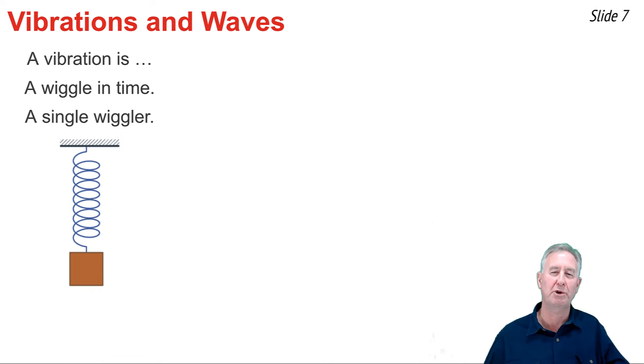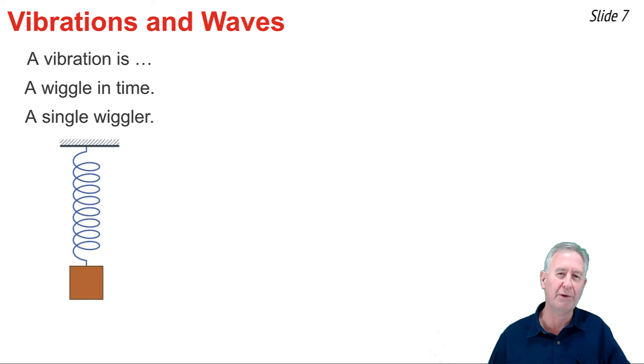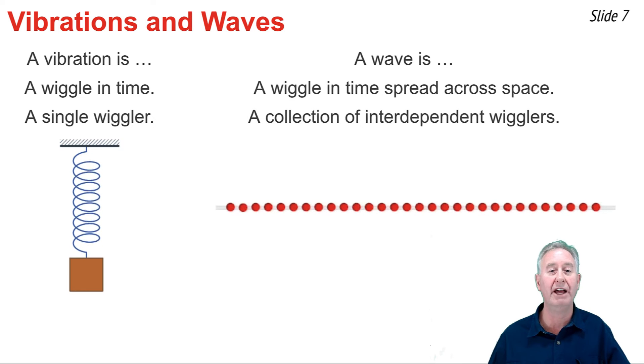Our study of vibrational motion will eventually lead us to a study of wave motion, and you might be wondering, well, how are the two ever connected? Well, I'm going to introduce the idea now and detail it later in a video called The Nature of a Wave. When you have a vibrating object, you have a single wiggler, an object that is wiggling back and forth over the course of time. But when you have a wave, you have a collection of interdependent wigglers.